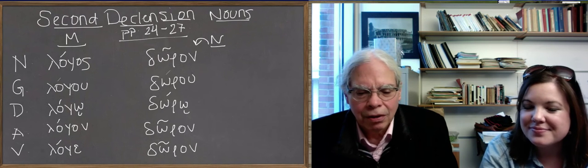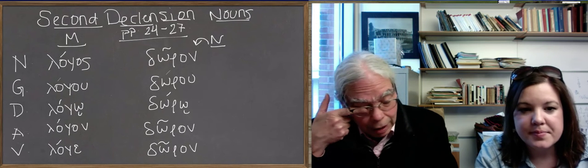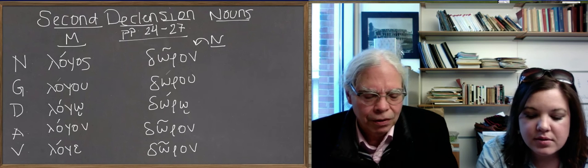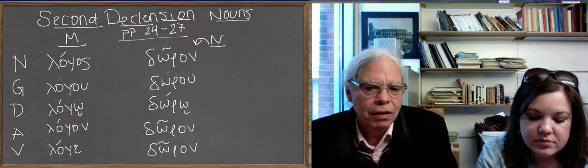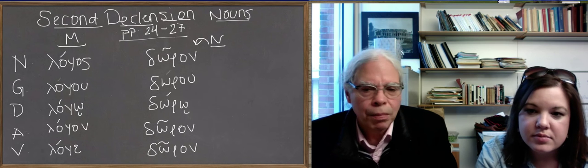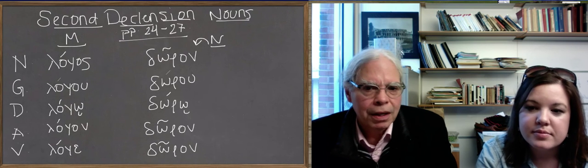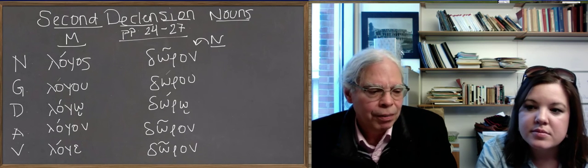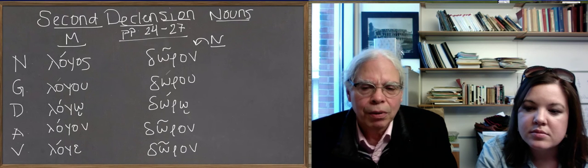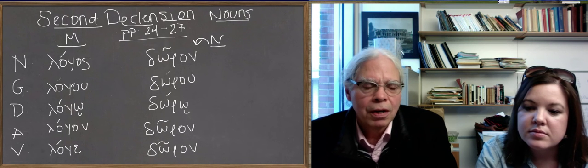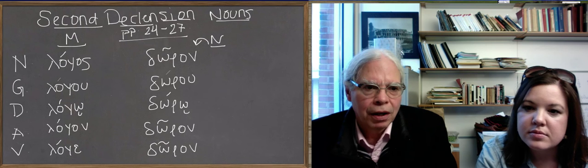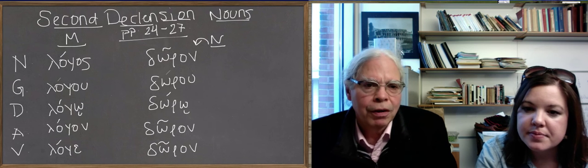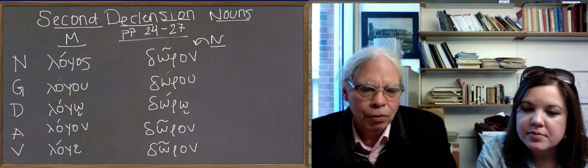Originally in the Indo-European, and this is important for what we're going to see, in Indo-European, the language from which Greek is a descendant, there was no masculine and feminine distinction. The basic distinction was between animate and inanimate. So that's why we're going to see some funny things about masculine and feminine in Greek. And the first example is this class of nouns. Most of them are either masculine, like logos, the genitive is lagu, or neuter, like doron, whose genitive is the same doru as lagu.